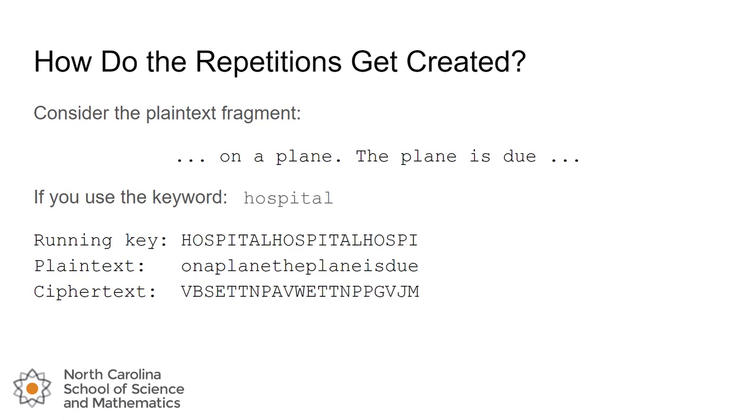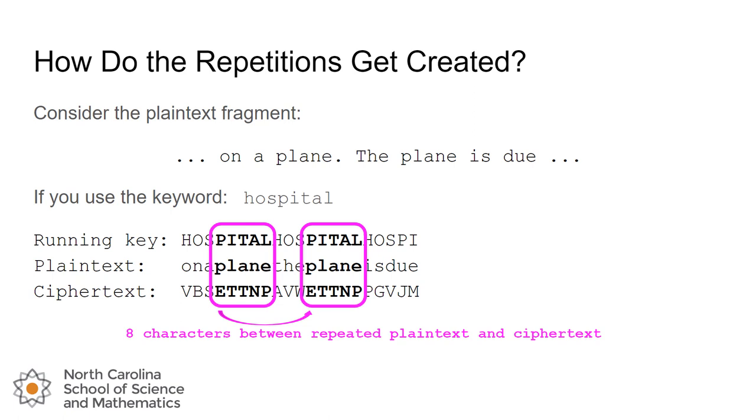Let's try one more time. Let's use an eight-letter keyword. We'll choose the word hospital and when we create our running key and we encrypt our plaintext yet again we get a repetition in the ciphertext because again in the running key the same five letters appear over the word plain both times. So let's think about that for a minute. Why are we getting sometimes our running key lining up over the same words in the plaintext? What might cause that to happen?